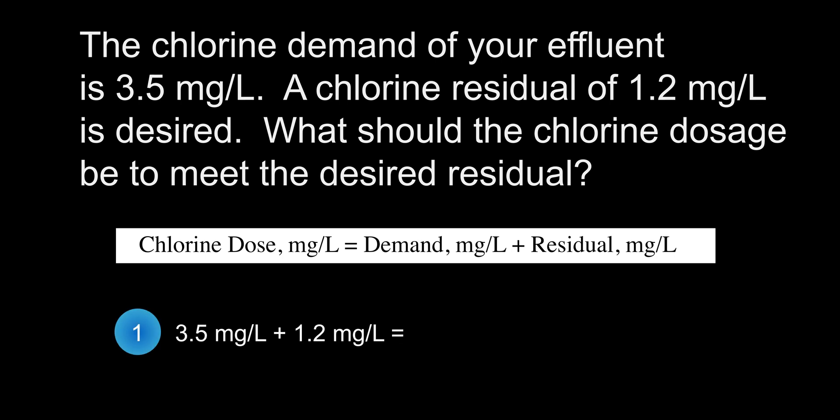We take the chlorine demand of 3.5 milligrams per liter and add it to the chlorine residual of 1.2 milligrams per liter to get a chlorine dose of 4.7 milligrams per liter. I have placed a link to an earlier video in this series — part 12, question 3 — that goes over chlorine disinfection in more detail.